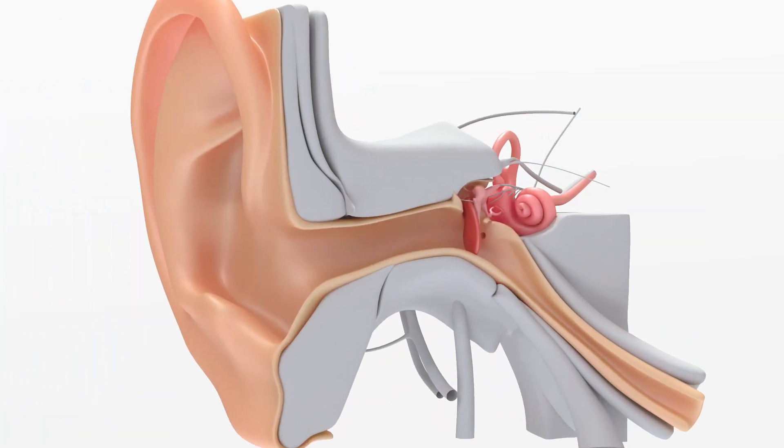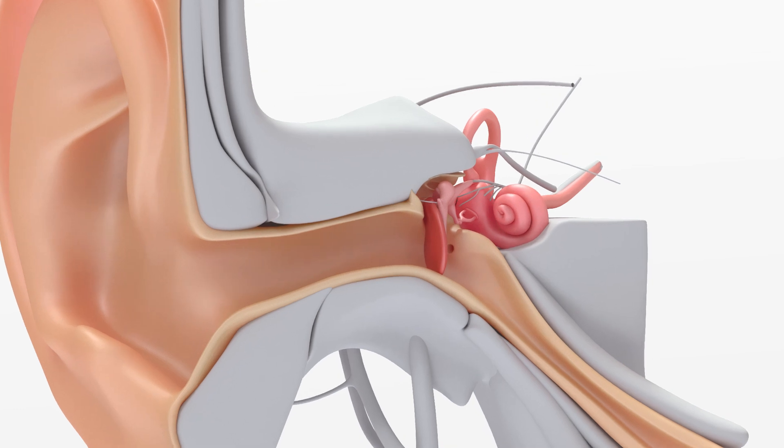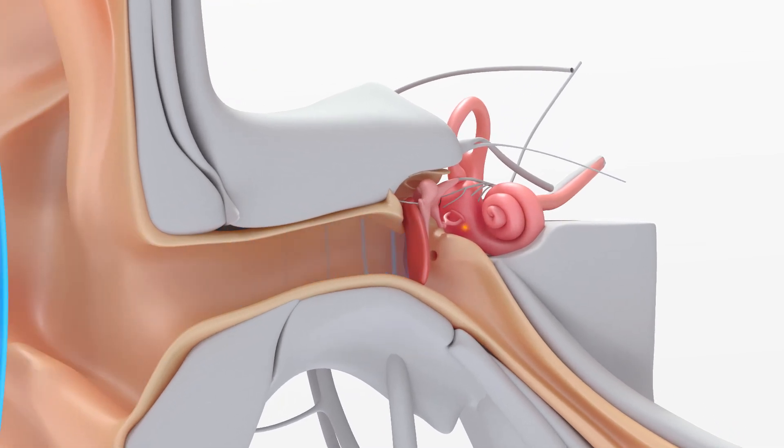When sound waves hit the eardrum, it vibrates and causes the linked bones to move, passing sound waves to the inner ear. Signals will be sent through the hearing nerves to the brain, allowing us to hear.